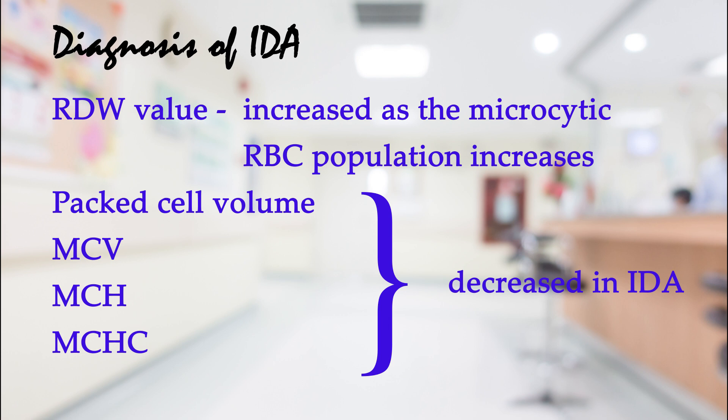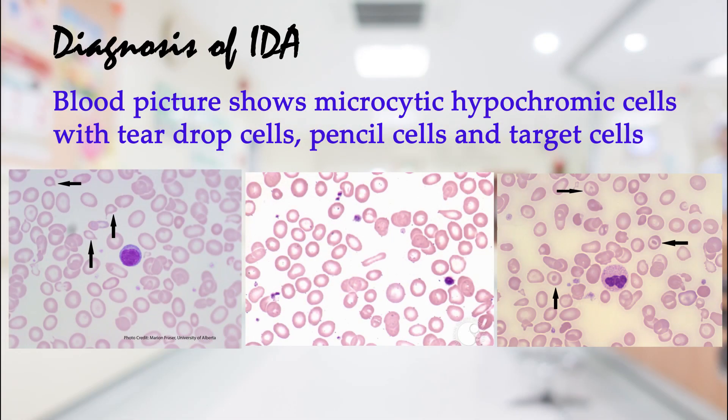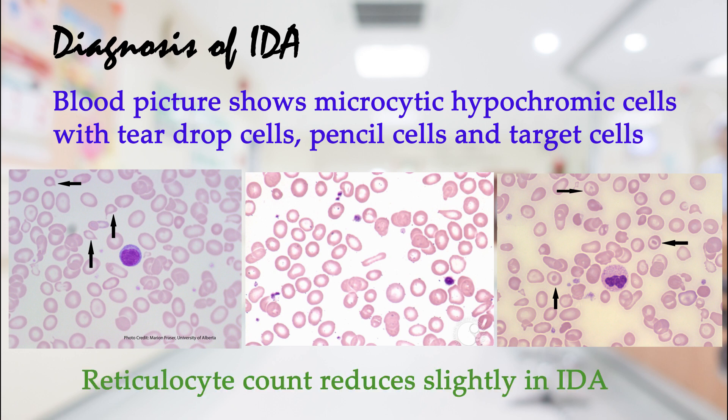Packed cell volume, MCV, MCH, and MCHC all decrease in IDA. Iron deficiency anemia is a type of microcytic hypochromic anemia, so the blood picture shows microcytic hypochromic cells, while teardrop cells, pencil cells, and target cells also appear. Reticulocyte count reduces slightly in IDA.